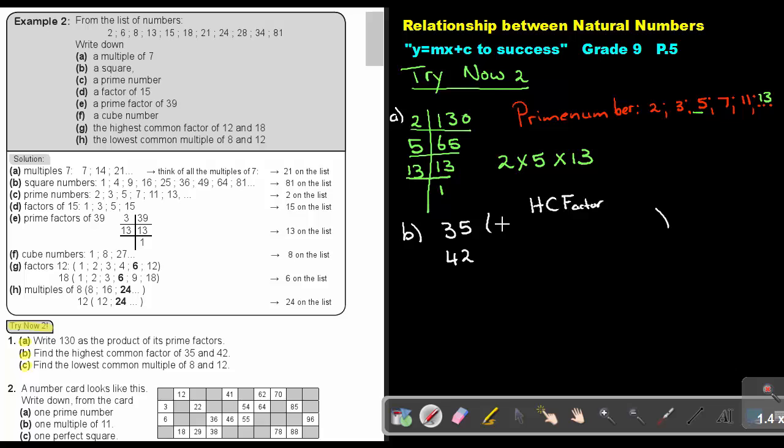What are the factors of 35? 1, 35. 2 cannot go. 3 also cannot, but 5 can. 5 goes in 7 times. So the factors of 35 are 1, 5, 7, 35.